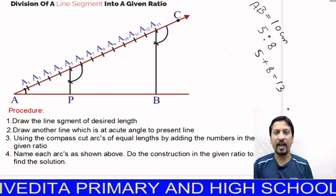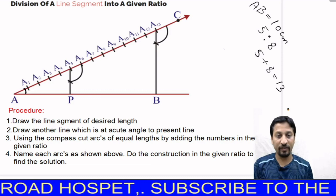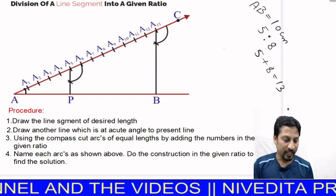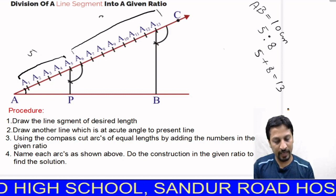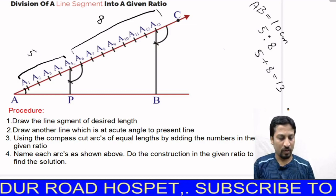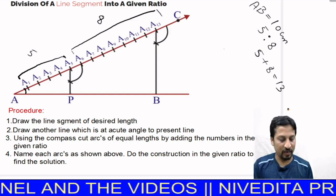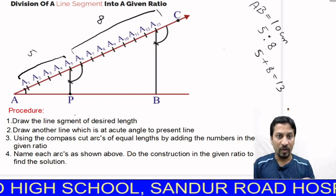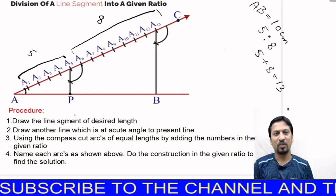There are two portions: 5 and 8. At the 5th point you divide the line segment. So A1 to A5 represents 5 divisions and A6 to A13 represents 8 divisions. By doing this construction, you divide line AB in the ratio 5 is to 8. Wherever the construction line meets, bring down a straight line to AB and mark that meeting point as P or C. This is the concept we will now learn through construction.